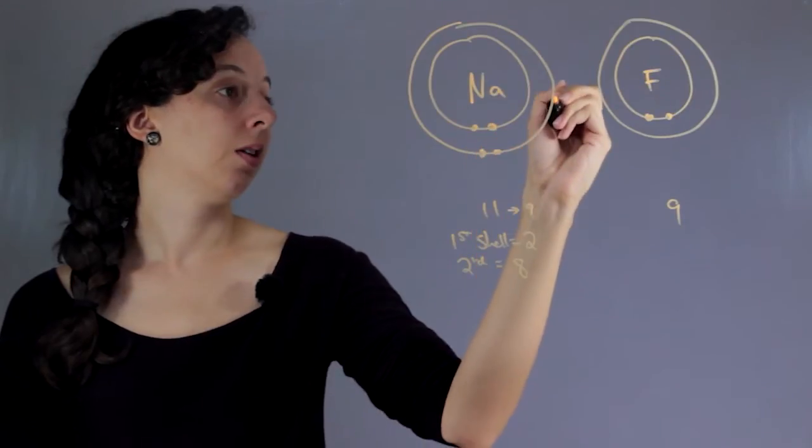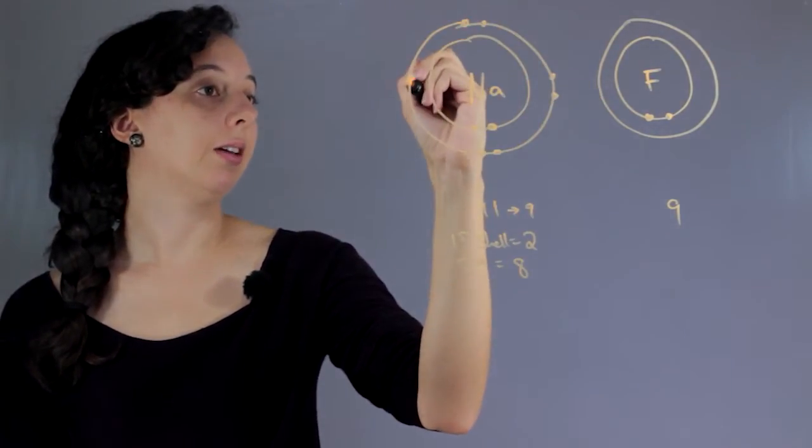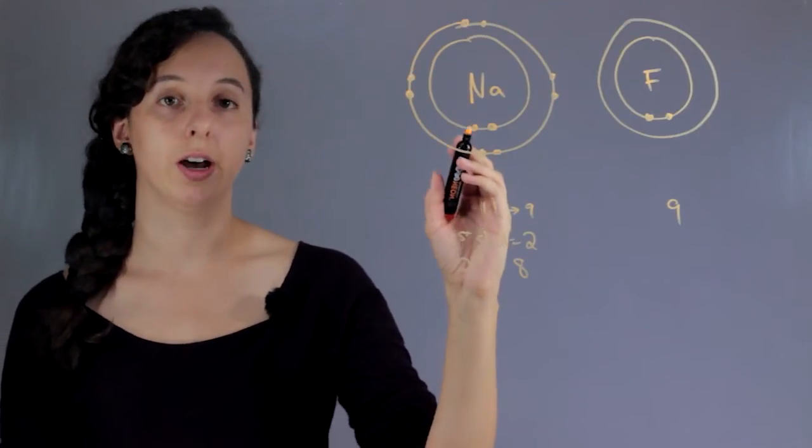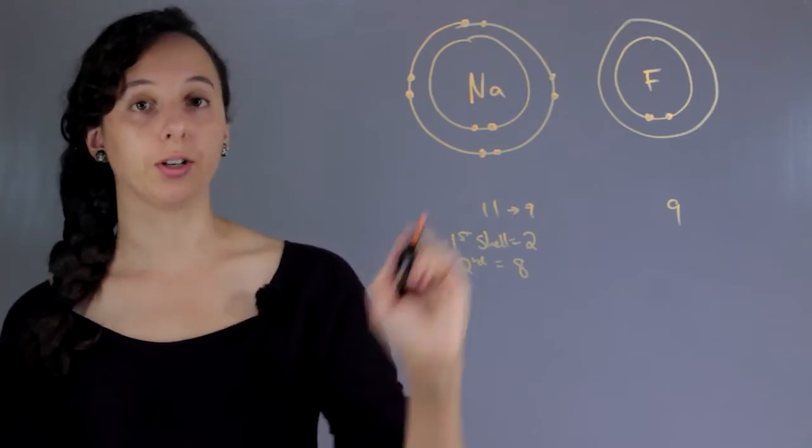And so we will completely fill this second shell in sodium. So 1, 2, 3, 4, 5, 6, 7, 8. And I'm drawing them like this because electrons always come in pairs if they can. So when you have 8, it's going to be 4 electron pairs.